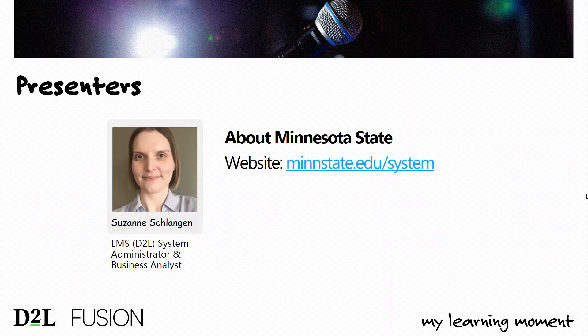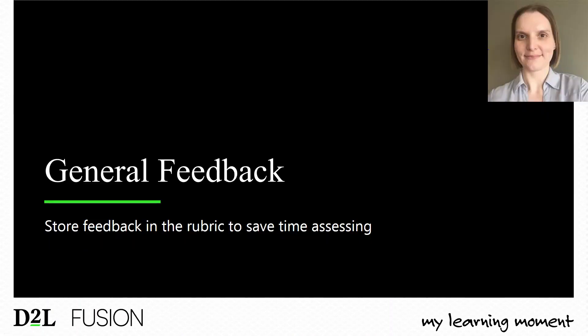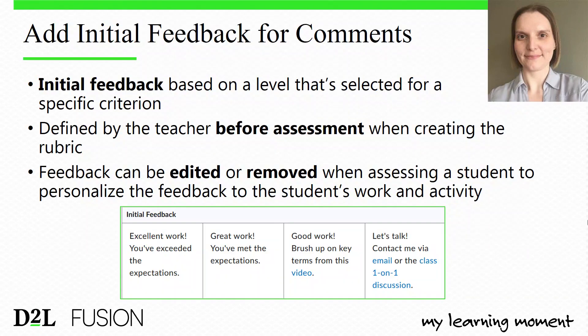One way we can do this is by using rubrics in Brightspace. What's a great feature when creating or editing a rubric? It's something called initial feedback, in which we can store feedback within the rubric itself, saving time later when assessing student work. In this initial feedback section of a rubric, a teacher can add in general feedback or comments they typically give to students who achieve a certain level for a specific criterion. We define the comments or feedback ahead of time and store it in the rubric itself.